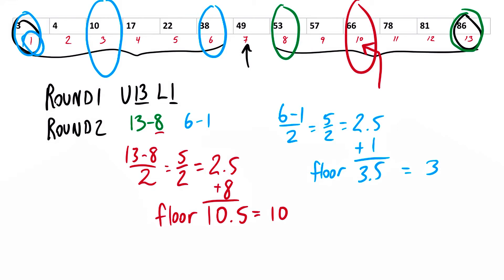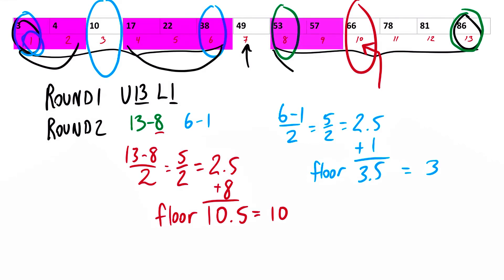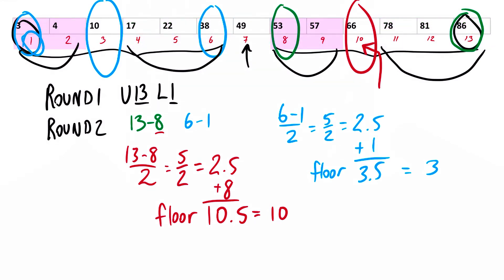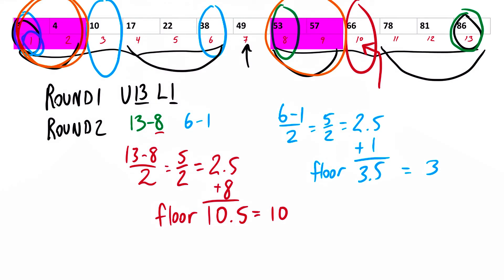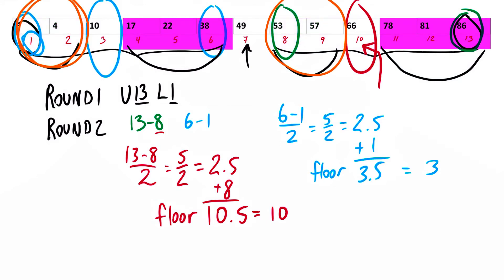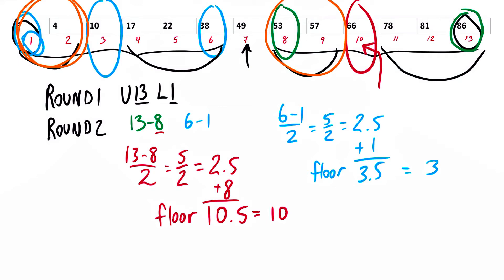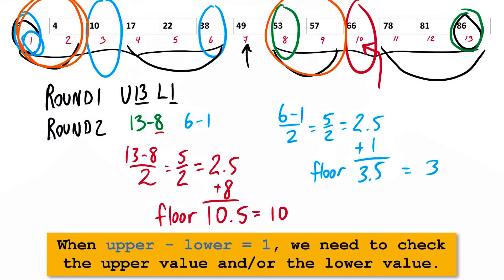Assuming I still haven't found the number I was looking for, in round 3 the ranges are going to be 1 and 2, 4 through 6, 8 through 9, or 11 through 13. If we narrow down our search to just two numbers, we really have to look at both values. If we have three or more values still left, we can use our midpoint formula again. I know it's time to check both values when I subtract the upper and lower positions and get 1.